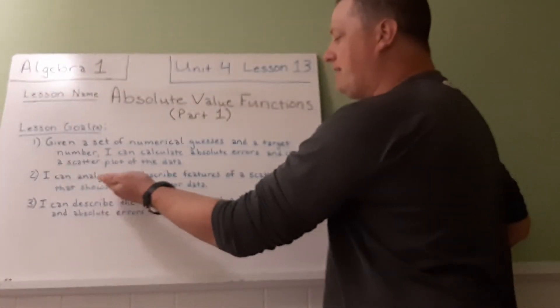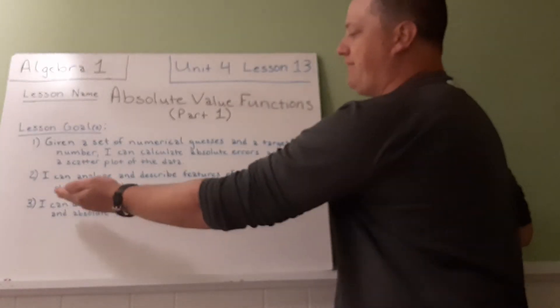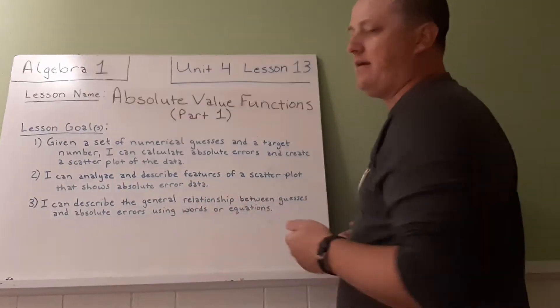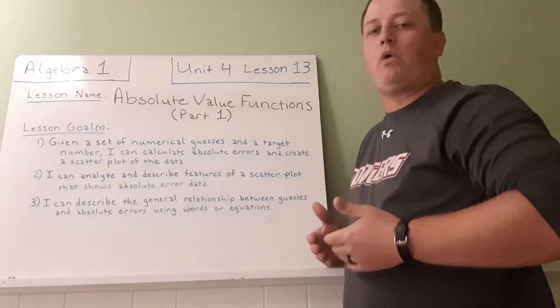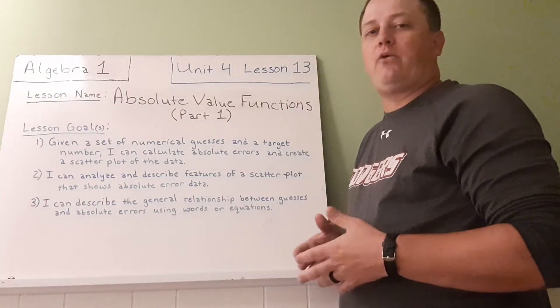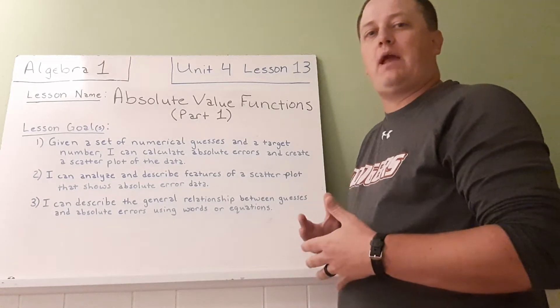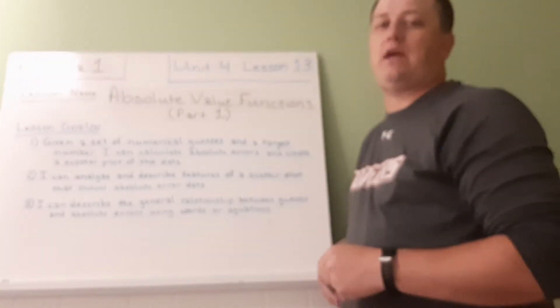I can analyze and describe features of a scatterplot that shows absolute error data. When we look at the absolute error, we're going to then graph it, and the graph will give us a certain shape, and we want to understand what that shape is.